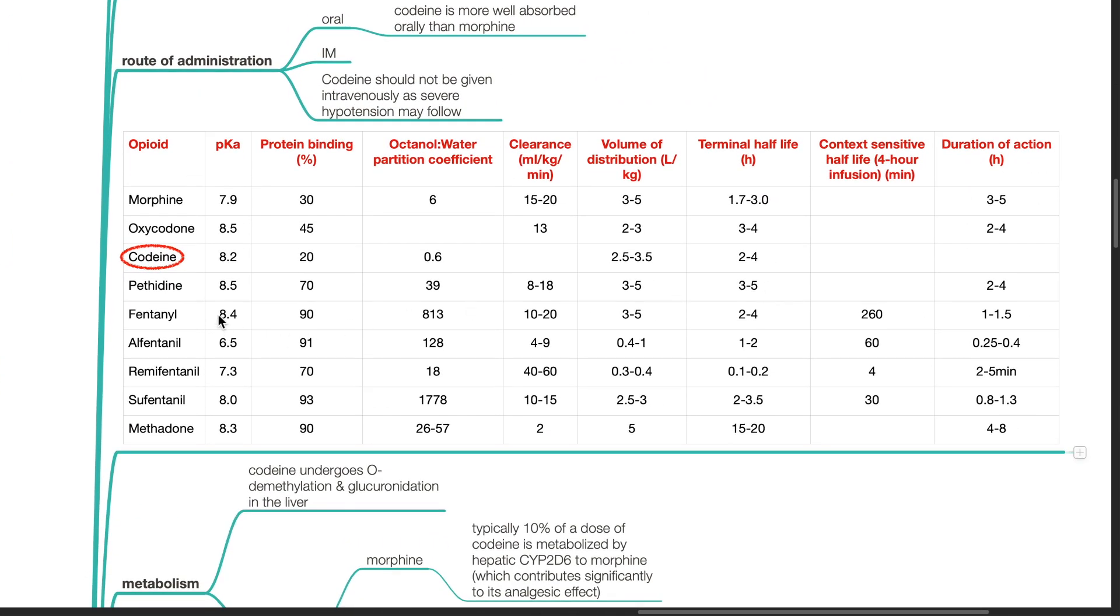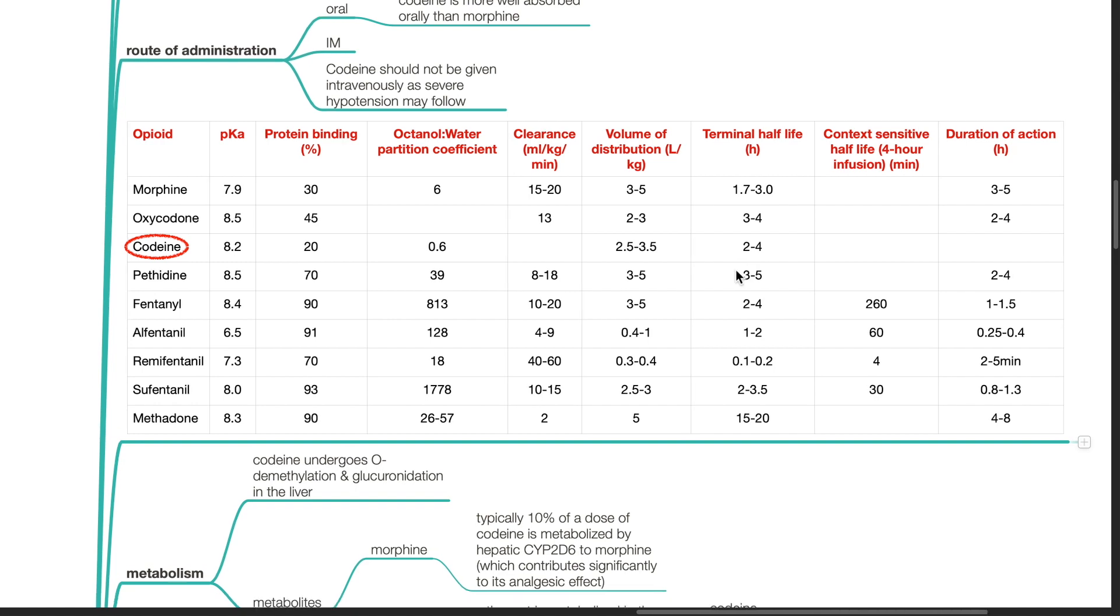Pharmacokinetics. The pKa for codeine is 8.2, protein binding 20%, octanol water partition coefficient 0.6, volume of distribution 2.5 to 3.5 liters per kg, terminal half-life is 2 to 4 hours.